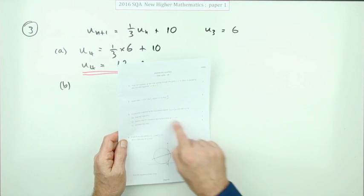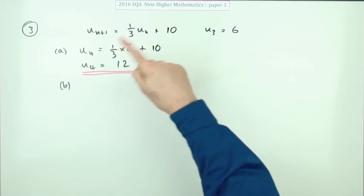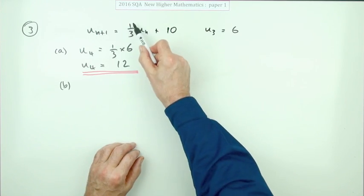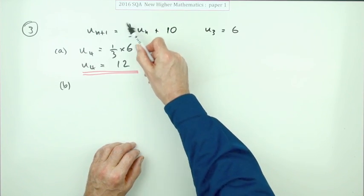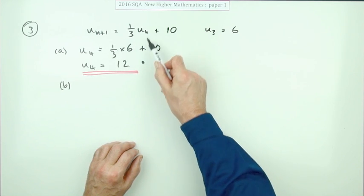Part B for one mark. Explain why this sequence approaches the limit as n tends to infinity. Now, these terms go on forever. Does it ever level off? And yes, it will, if you're multiplying by a proper fraction, which will make these terms get smaller. Remember, you're always going to be adding ten.